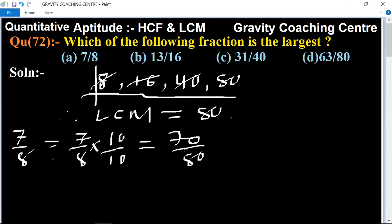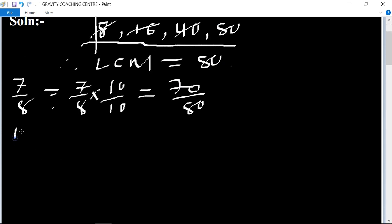Another is 13 upon 16. 13 upon 16, and 80 divided by 16, so the result is 5. Multiply by 5 upon 5, equal to 65 upon 80.